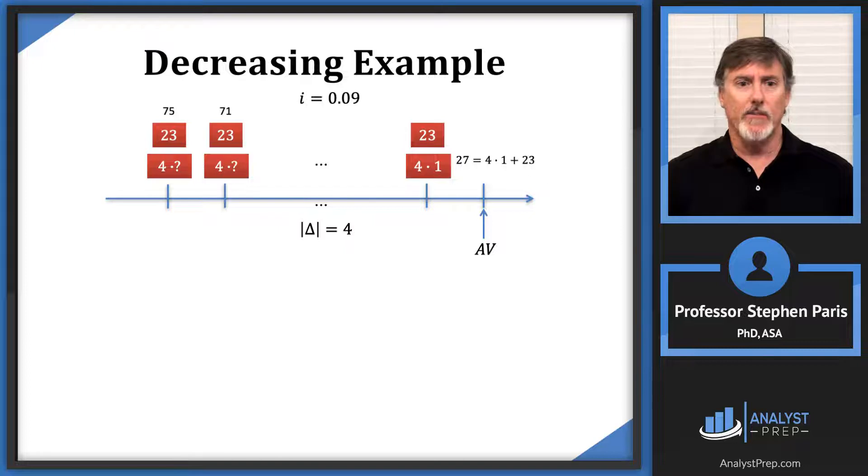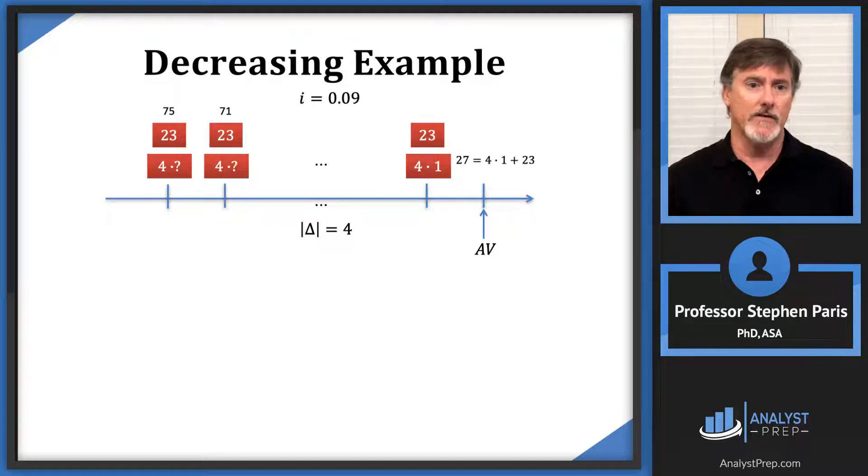The 71—let's focus on the 71—is 23 plus, well, subtract 23 from 71, you'll get 48. So the 71 I replace with a 23 and then a 4 times 12 because that's what 48 is. And then 75 would be 4 times 13.